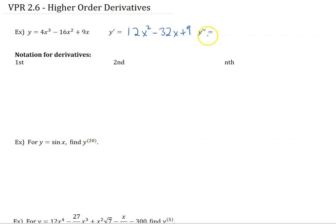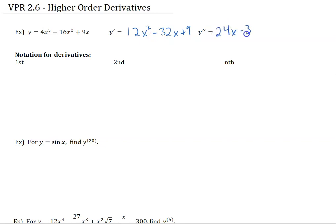And then y double prime — we read that as double prime. For y double prime, we need to take the derivative of y prime. So to do that, we use the power rule again, and we get 24x minus 32 plus 0.